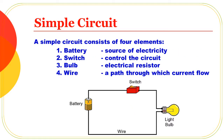First, the simple electric circuit. A simple circuit consists of four elements: the battery, which is the source of electricity; the switch, which controls the circuit by turning it on and off; the bulb, which is the electrical resistor that glows; and the wire, which is the path through which current flows.